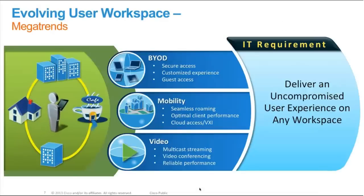Before I start on 3850, I'd like to discuss the megatrends that enterprise segments are seeing in the user workspace. Many of you would have been discussing BYOD — that's one of the major megatrends we're also seeing in customer networks. In simple words, BYOD means a user or employee of your organization wants to bring in their own personal wireless device. But how do you make sure that the access they get is secured enough so they do not take information from your enterprise network out to the public?